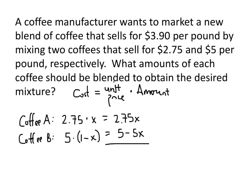The total of these two costs should equal $3.90. So our equation looks like 3.90 equals, and when I add these together I get 5 minus 2.25x — that is, 2.75 minus 5 gives negative 2.25 as the coefficient of x. So now I have an equation to solve.